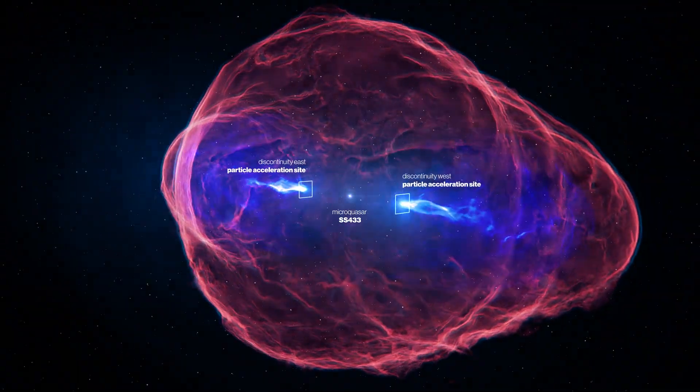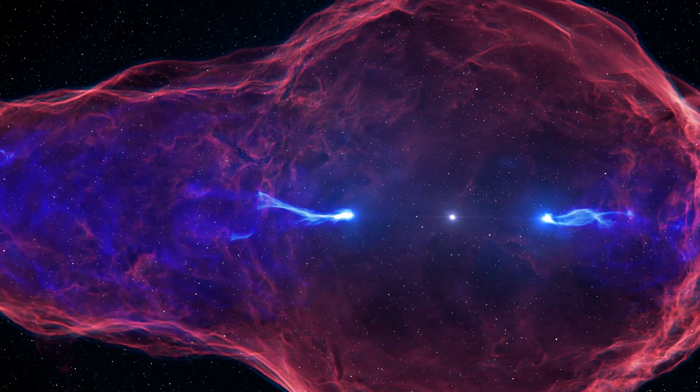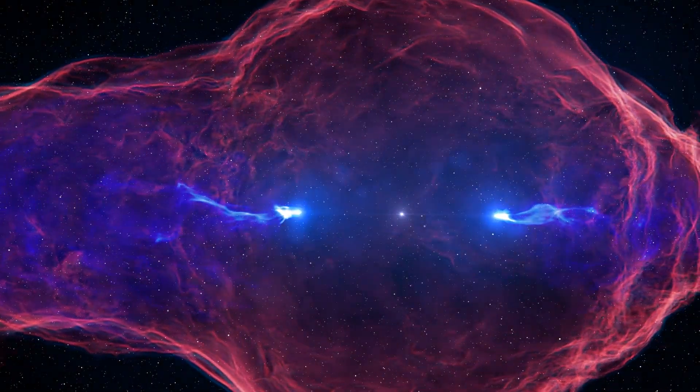The jets reappear as bright X-ray and gamma-ray sources, due to the presence of a strong shock in the collimated flow.